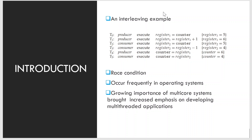One such interleaving is given as an example. The producer executes: register1 = counter (counter is 5, so register1 = 5). Next, the producer executes register1 = register1 + 1, giving register1 = 6. The consumer executes register2 = counter (register2 = 5), then register2 = register2 - 1, giving register2 = 4. The producer then executes counter = register1, so counter becomes 6.